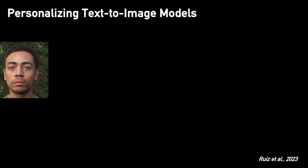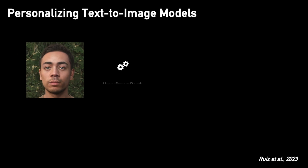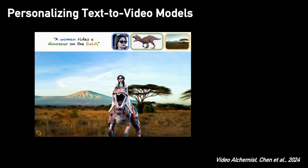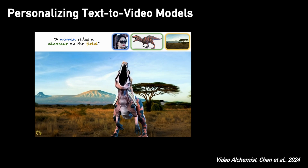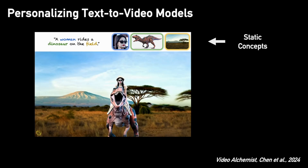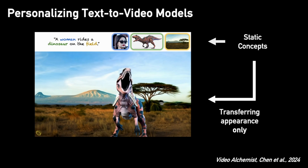Personalizing text-to-image models allows us to take a concept from an image and reimagine it in different contexts using guiding text. We refer to these concepts as static concepts because only their appearance is transferred to the outputs. Even with recent advancements in video personalization, the focus remains on static concepts, preserving appearance by generating motion using the model's prior.